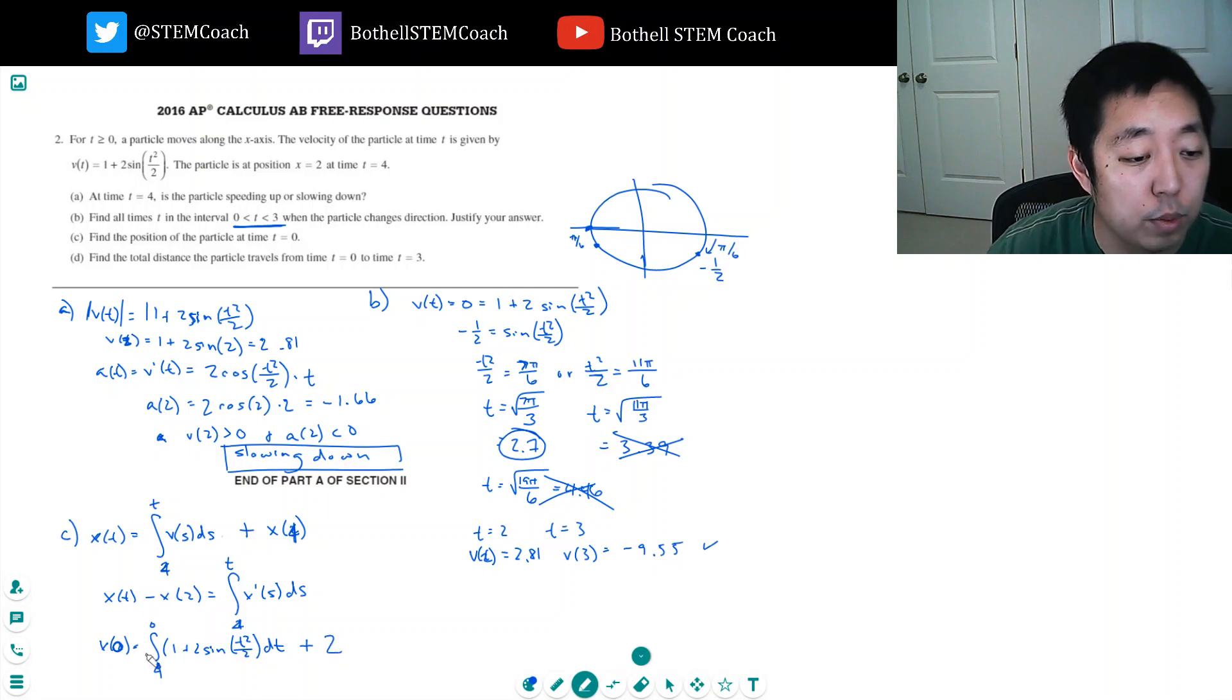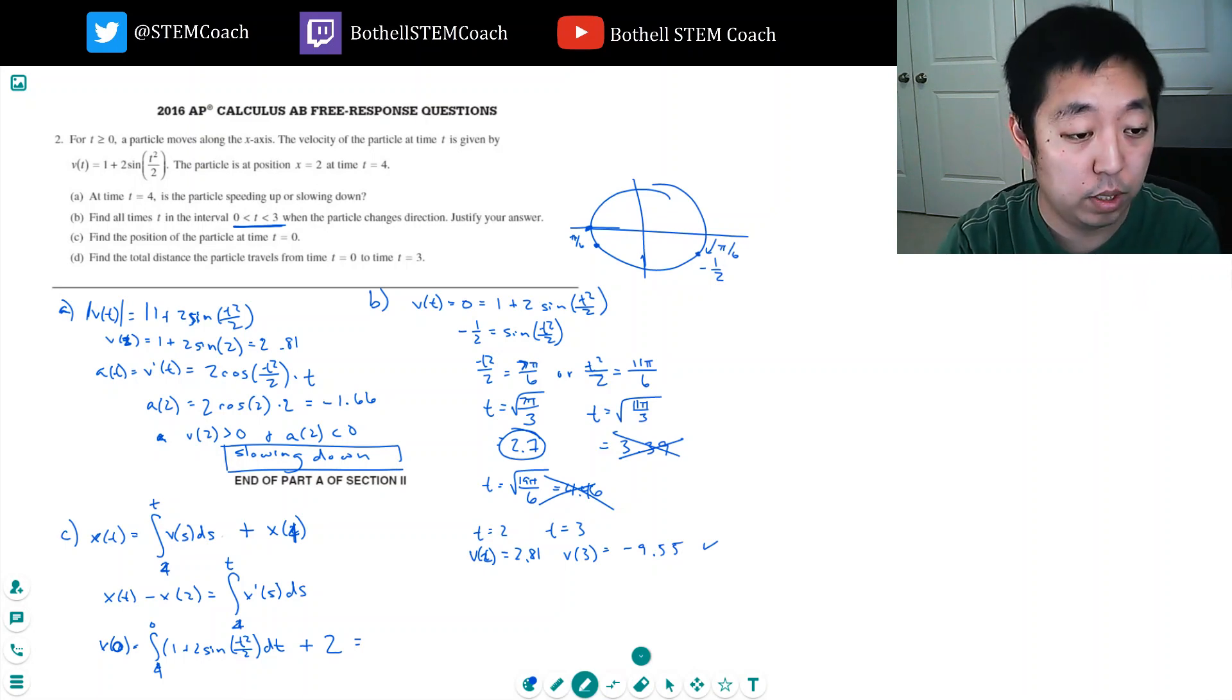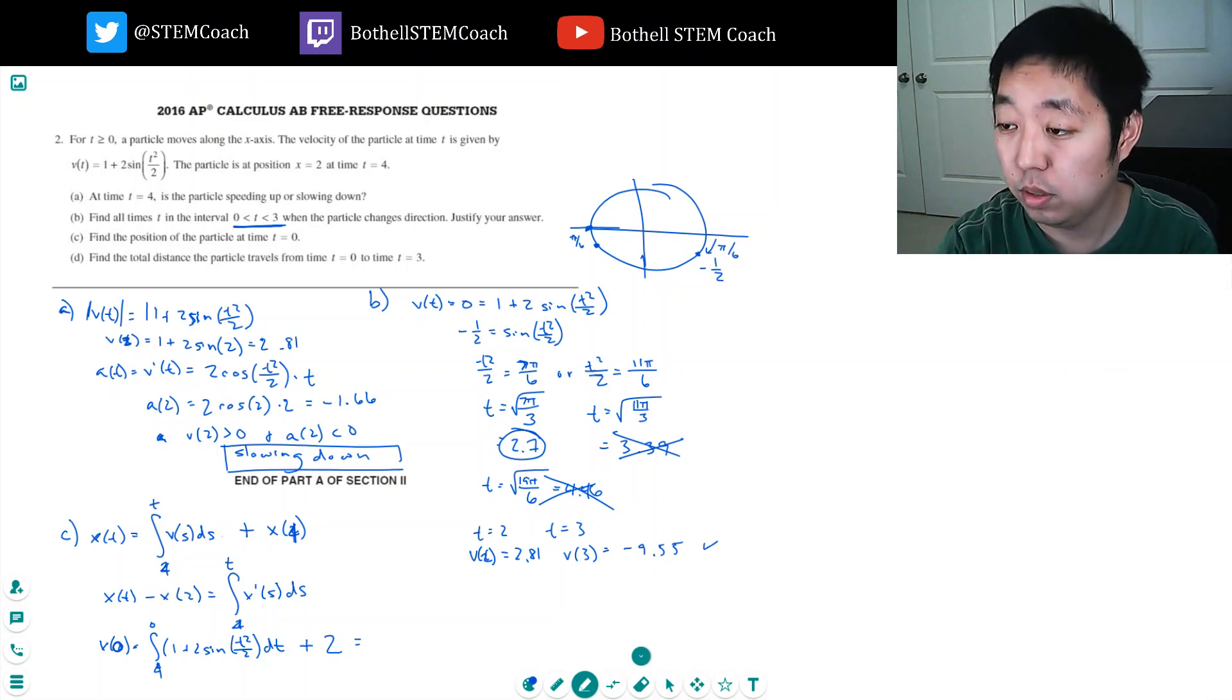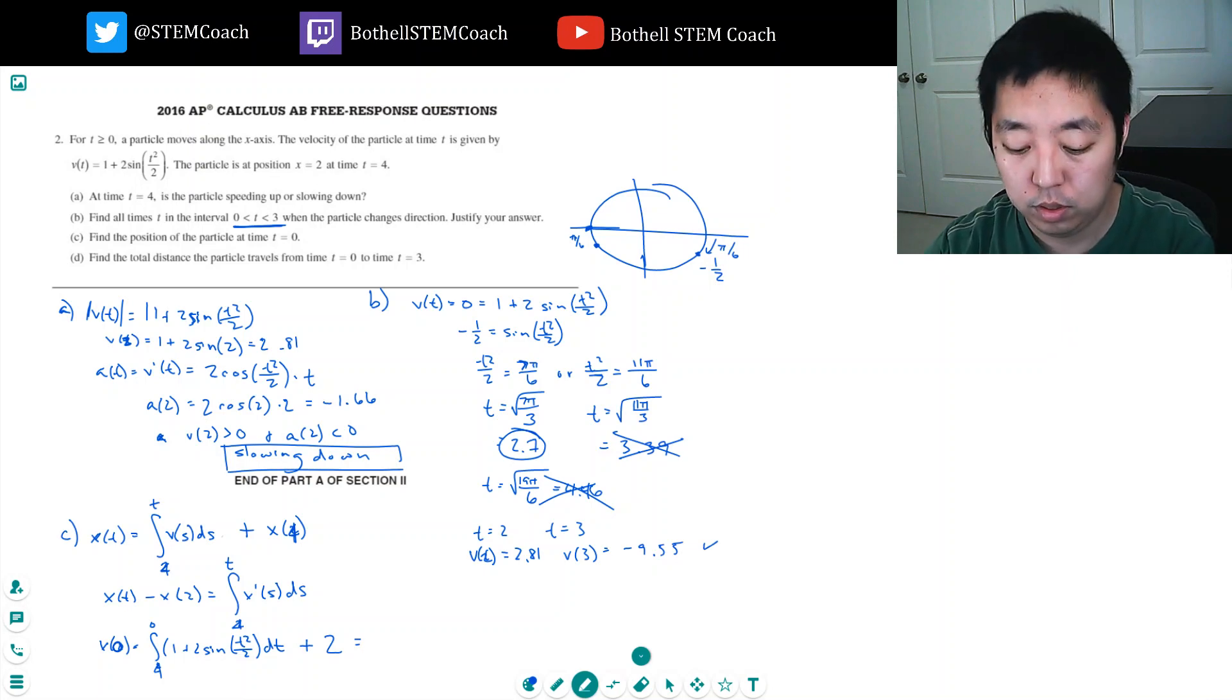Does that make sense? Let's try a calculator. There's some ads popping up on this thing. 1 plus 2 sine x square divided by 2. Integrate from 4 to 0.